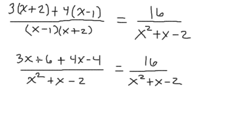Now you notice that both of our denominators here are the same on both sides of the equal sign. Let me go ahead and simplify this out. We have 3x and 4x is our like term. So that gives us 7x and 6 minus 4 is 2.